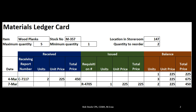The warehouse received this information and counted it. The receiving report shows two units at a unit price of $225, so the total price is two units times $225, or $450. Bringing this over to the balance: we started with one unit at $225. Adding the two new units gives us three units, all still costing $225, so three times $225 means we have a total balance of $675 — as of March 4th we have $675 worth of wood plank inventory.